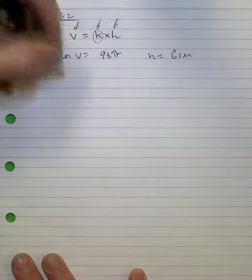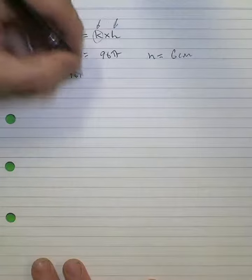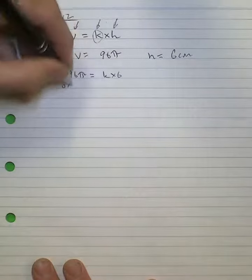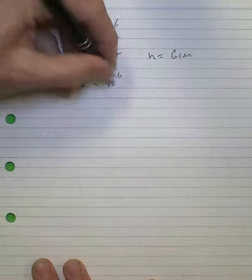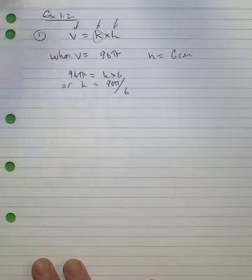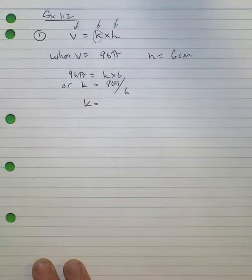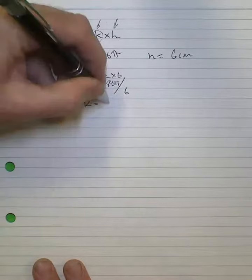So in this instance, 96π is equal to k times 6, or k is equal to 96π divided by 6, which when we do division, will give me a total of 16π.